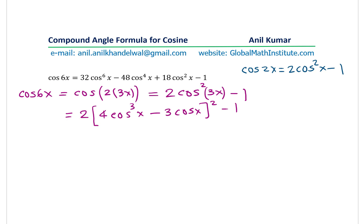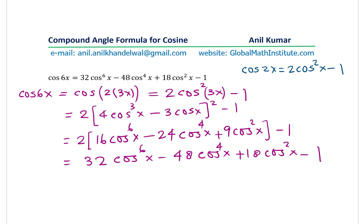And now, you can expand this using perfect squares formula. And what do you get? Square of 4 is 16 cos⁶ x minus 2ab, which means 24. Product of these two means cos to the power of 4x, square of the last term here, which is plus 9 cos² x minus 1. And now, we just need to open this bracket to get the result, which is 32 cos⁶ x minus 48 cos⁴ x plus 18 cos² x minus 1. So, that is how you are going to do it.